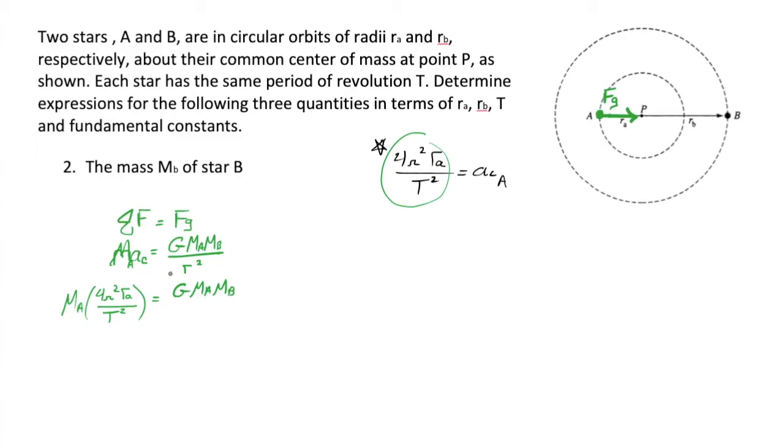And that's equal to G, MA, MB. And what can we say about the radius, the radius squared? Well, according to this picture, the distance between planet A and planet B is going to be that plus that. Star A and star B, rather. So RA plus RB.